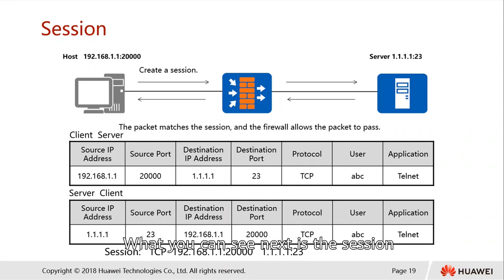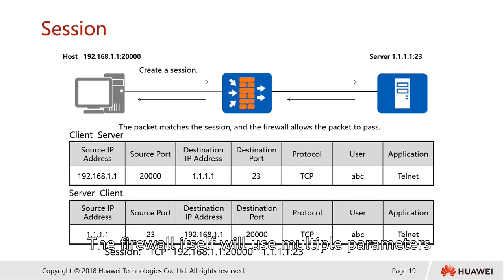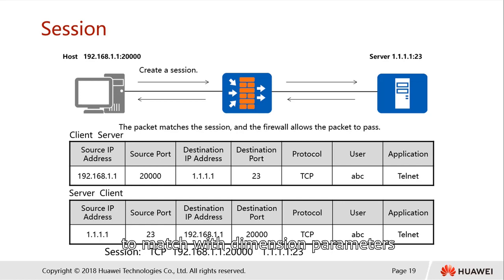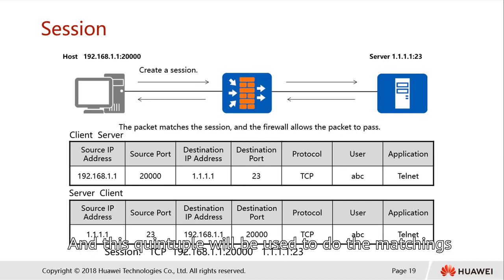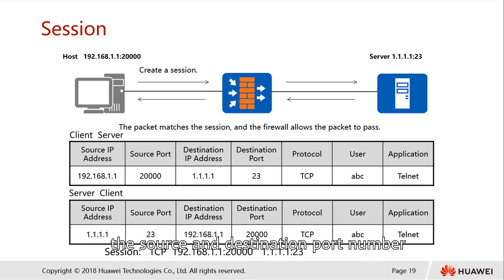Sessions are the basis of our firewall. We create a session table for any data flow passing through the firewall. The firewall uses multiple parameters such as source and destination IP, port numbers, and protocol as parameters. The session table is generated dynamically to match these parameters. These parameters are also what we call the 5-tuple, which is used for our matching. So far in our firewall, we are able to filter based on source and destination IP, source and destination port number, protocols, users, and applications.